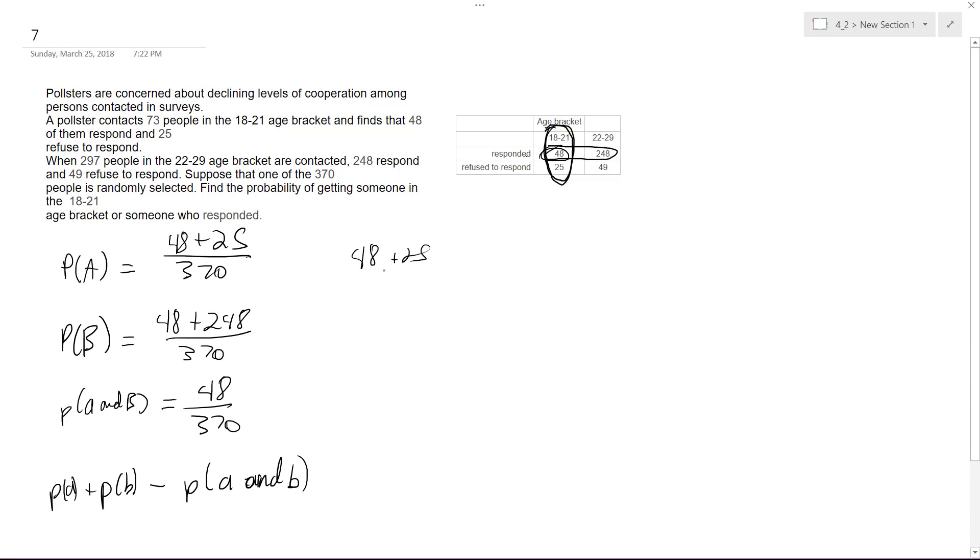So when you have 48 plus 25 over 370, plus 48 plus 248 over 370, and then minus 48 over 370...